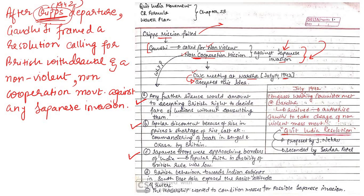Indians were aware that the British were retreating from South Asian regions because of the Japanese invasion, and it might happen that the British would withdraw their forces from India and allow Japan to invade. We did not want to be slaves to a new country. The fourth reason was that British behavior towards Indian subjects in Southeast Asia exposed the racist attitude of British rulers. The leadership wanted to condition the masses for a possible Japanese invasion, and that is why Gandhiji called out for this resolution.